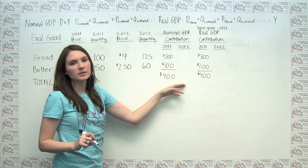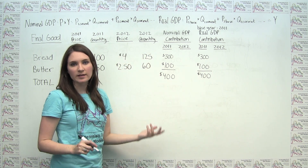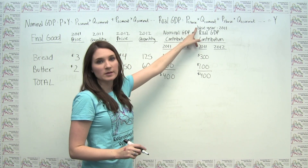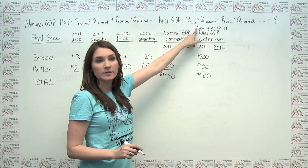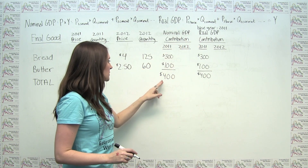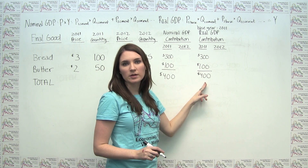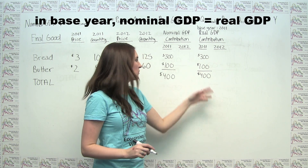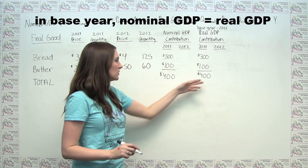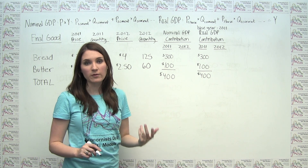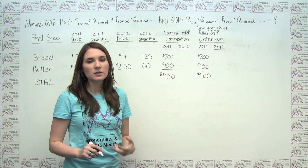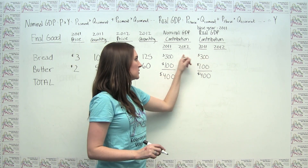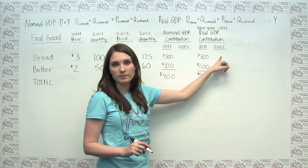In general, it is in fact the case that in the base year — in this case 2011 — nominal GDP and real GDP are going to be the same. That's just because of the way nominal and real GDP were defined. So it becomes more interesting when we start thinking about years that are not the base year.